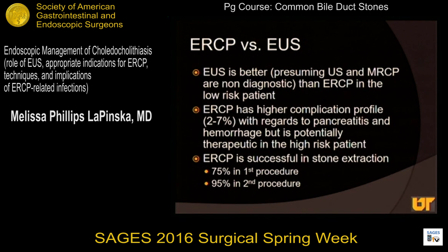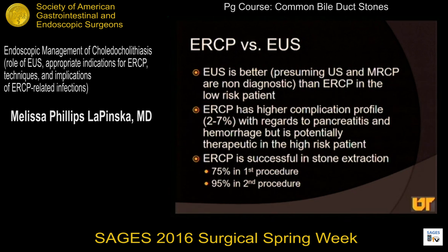Summarizing the difference between EUS and ERCP: EUS is better — presuming that you do not have a diagnostic ultrasound or MRCP showing your common duct stones — than ERCP in the low-risk patient population. Specifically, ERCP carries a complication rate between 3% and 7%, most commonly related to pancreatitis and hemorrhage, but is also a therapeutic intervention. ERCP has a clearance of stones from the common bile duct of 75% in the first procedure and 95% in the second procedure.